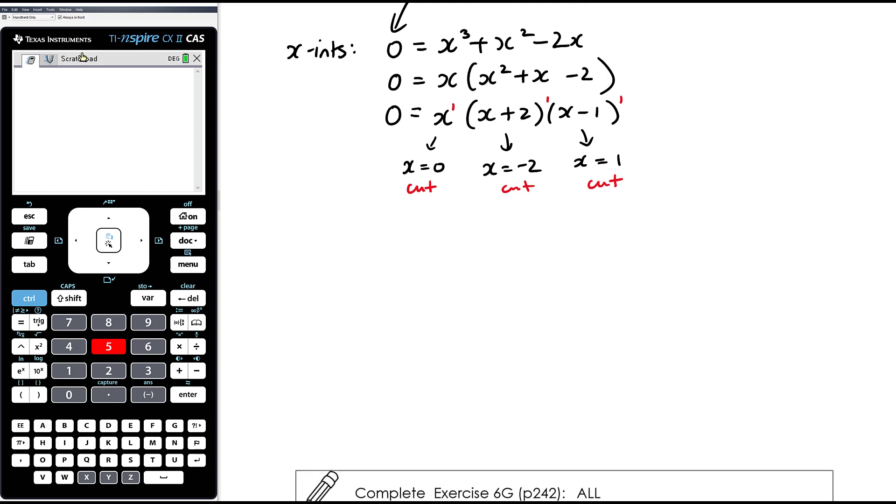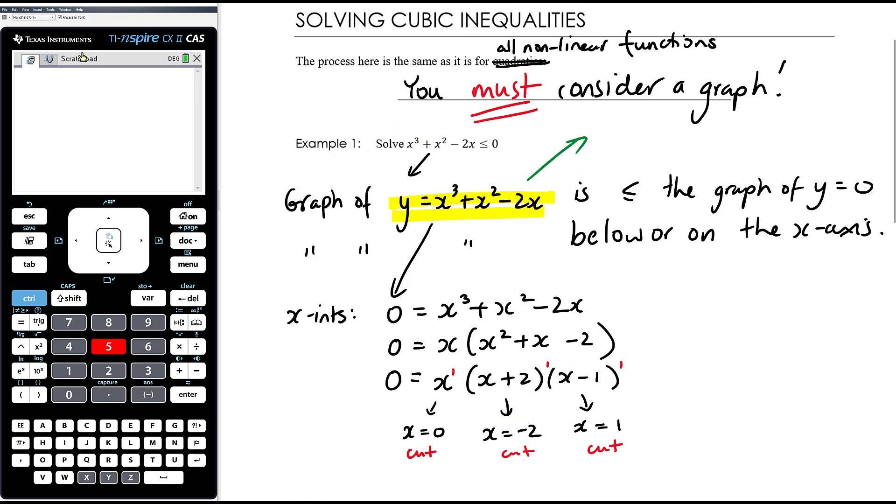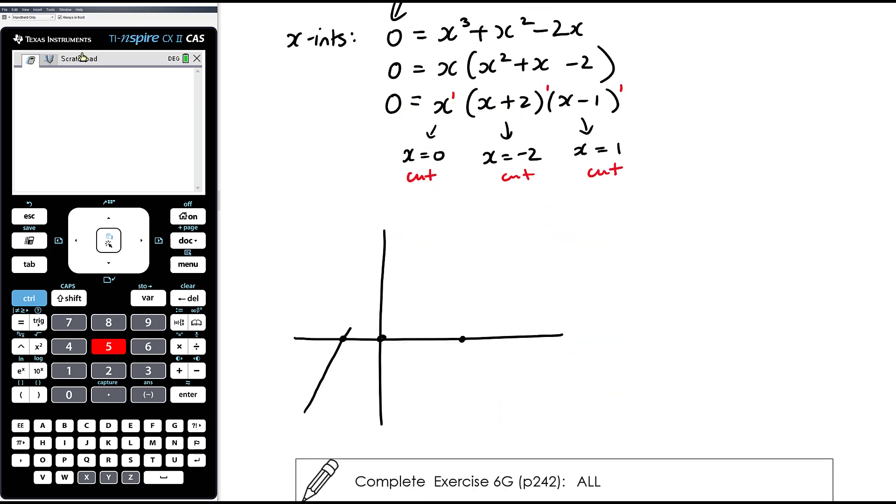So our graph then, negative 2, 0, and 1. Again, it doesn't need to be perfect, it's just a sketch to allow us to solve the inequality. And we decided it was a positive cubic, so we're going up as we go from left to right, so we're coming from there, we're going down here, we're going up here.